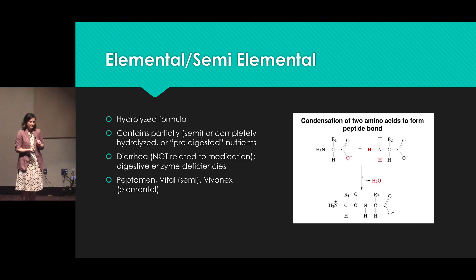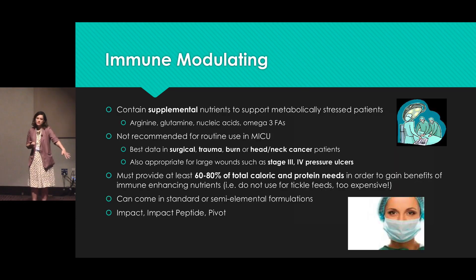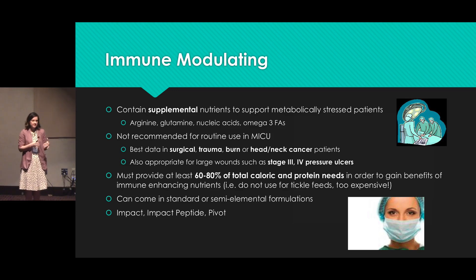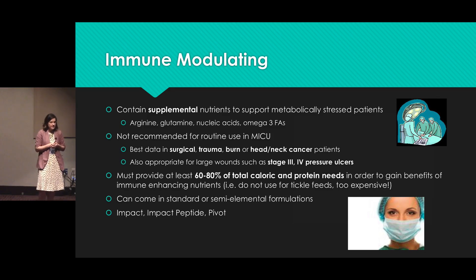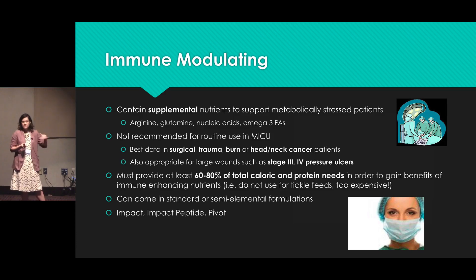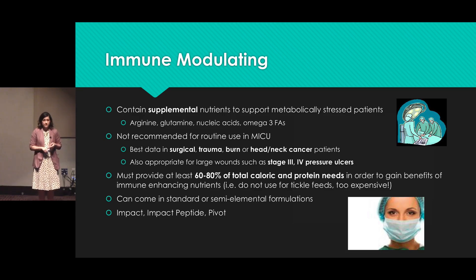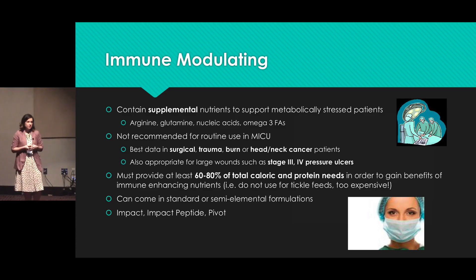There are a couple of examples of these. Next we have immune modulating formulas. Essentially, they contain extra supplemental nutrients — most of the time arginine, glutamine, nucleic acids, and omega-3s. The best data and indication for these is in surgical, trauma, burn, or head and neck cancer patients. We should not be using this formula routinely — it's not one you want to start at a trickle or trophic rate. First, it's extremely expensive, and to get the benefits of those extra nutrients you need to be feeding at least 60 to 80 percent of their needs.